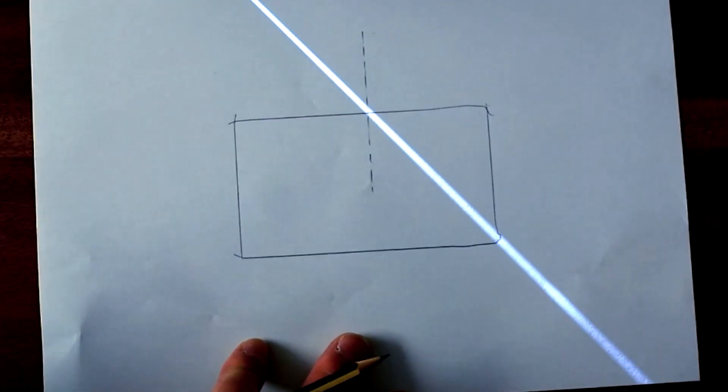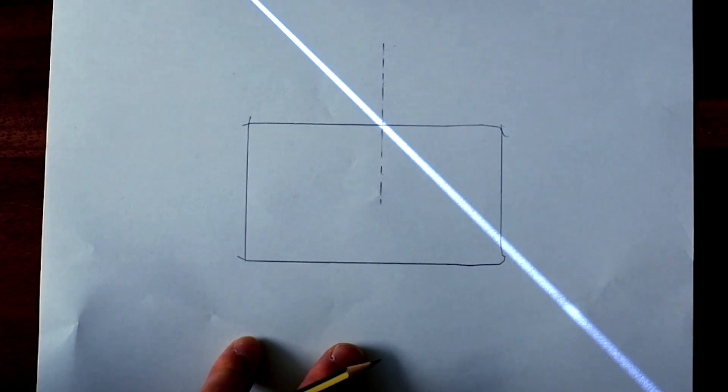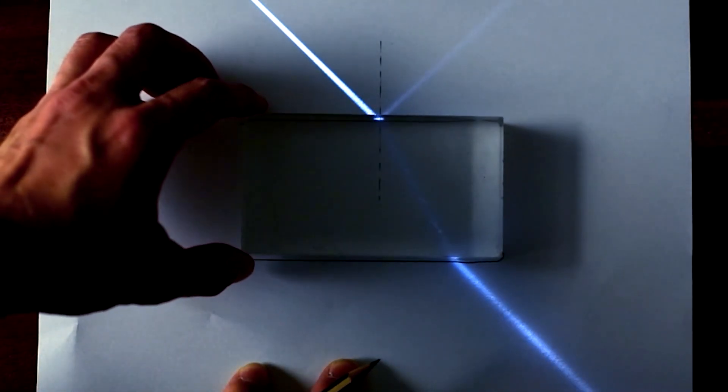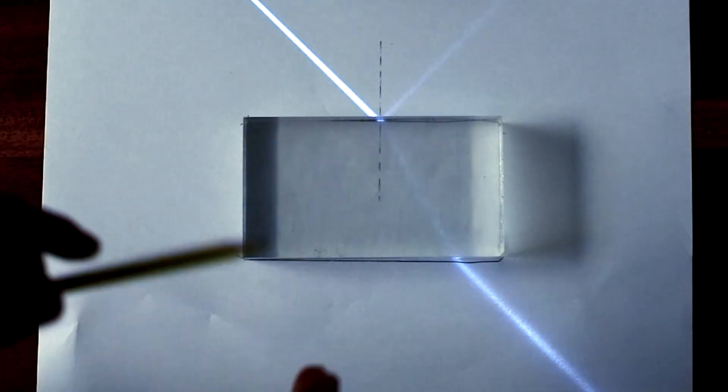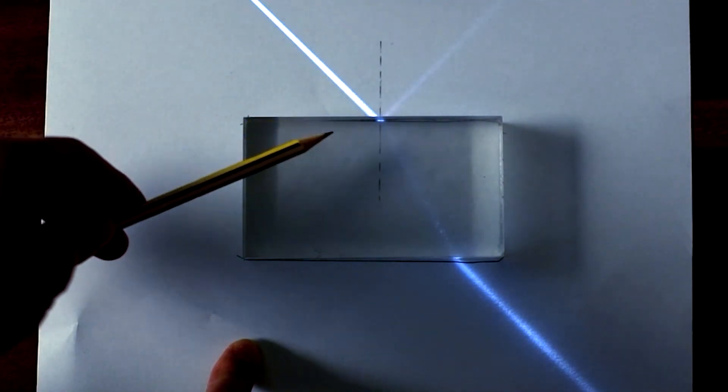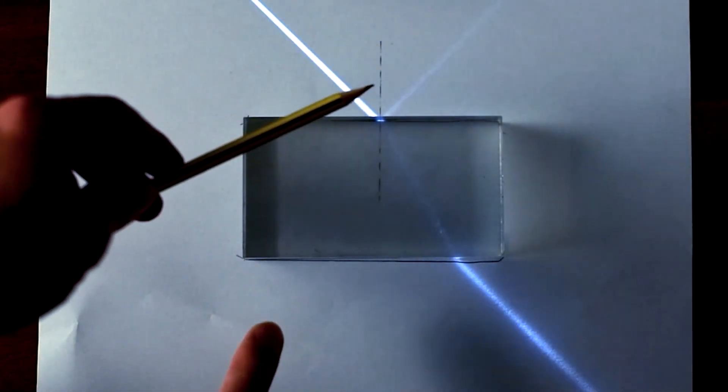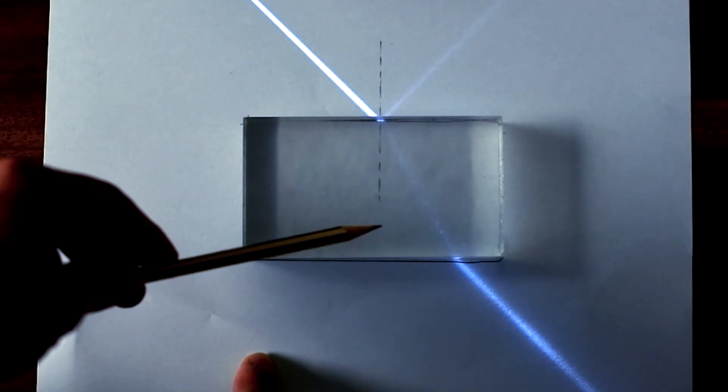So I'm now ready to start measuring my first angle of incidence of the ray going into the block. So I'm going to put my block back on there. And what can we see happening here? We can see that the light is going in. Can you see that we have a partial reflection? We always get that when light goes into another medium.